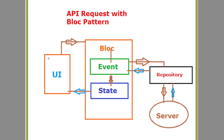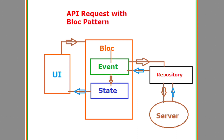First, take a look at this basic diagram which will help us understand how BLoC works and how to make a POST request to the server. From the UI we access the BLoC, which triggers events, and events would eventually trigger state. Events would talk to the repository files in our application, and the repository would talk to the server.